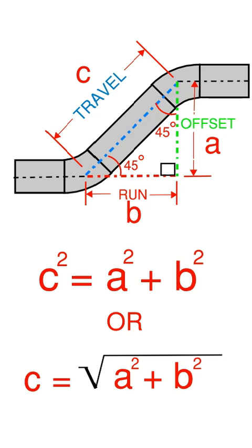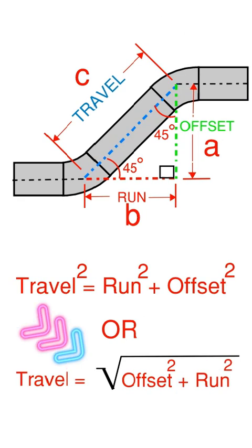In pipe fitter terms, we could say the travel equals the offset squared plus the run squared, all under the square root key. Travel = √(Offset² + Run²).